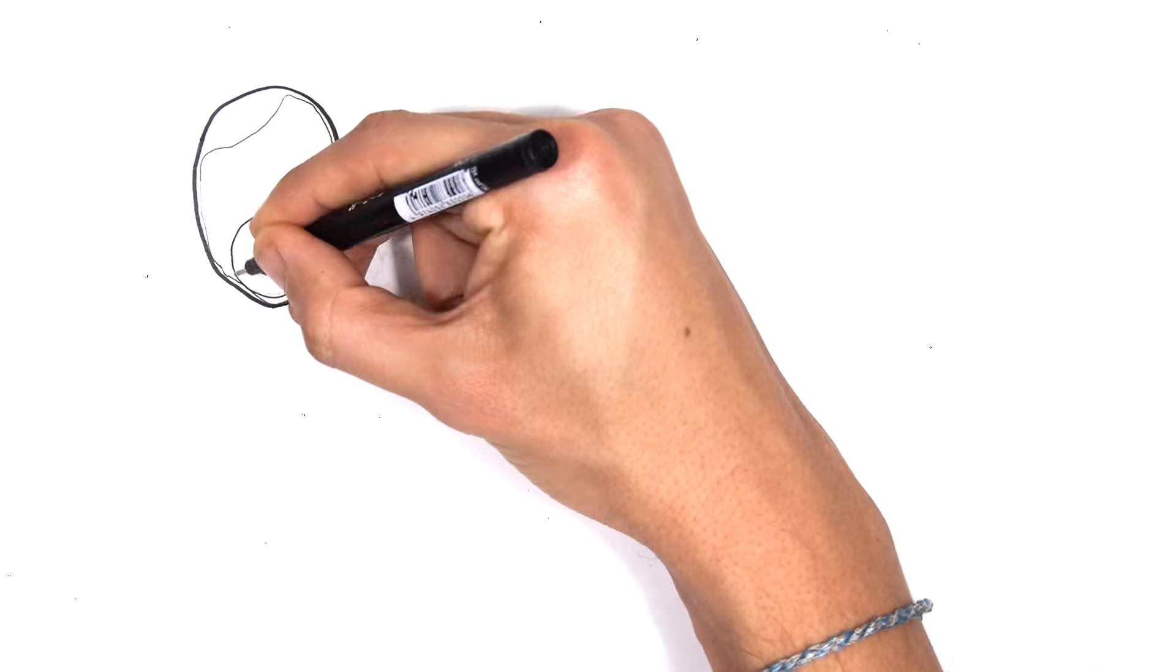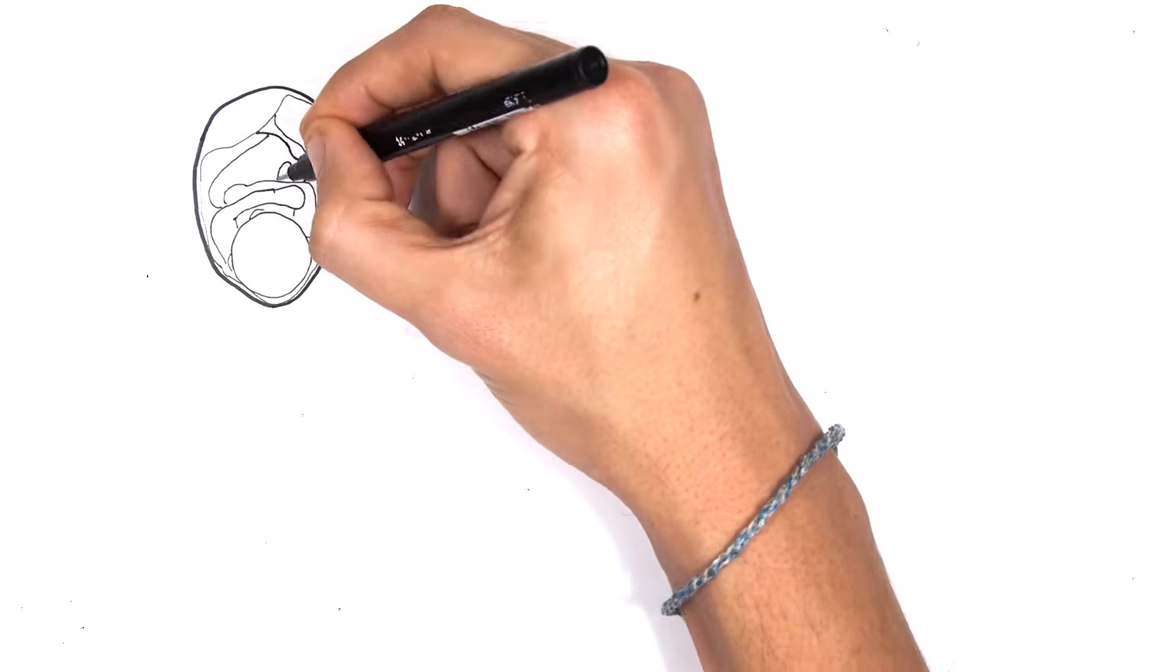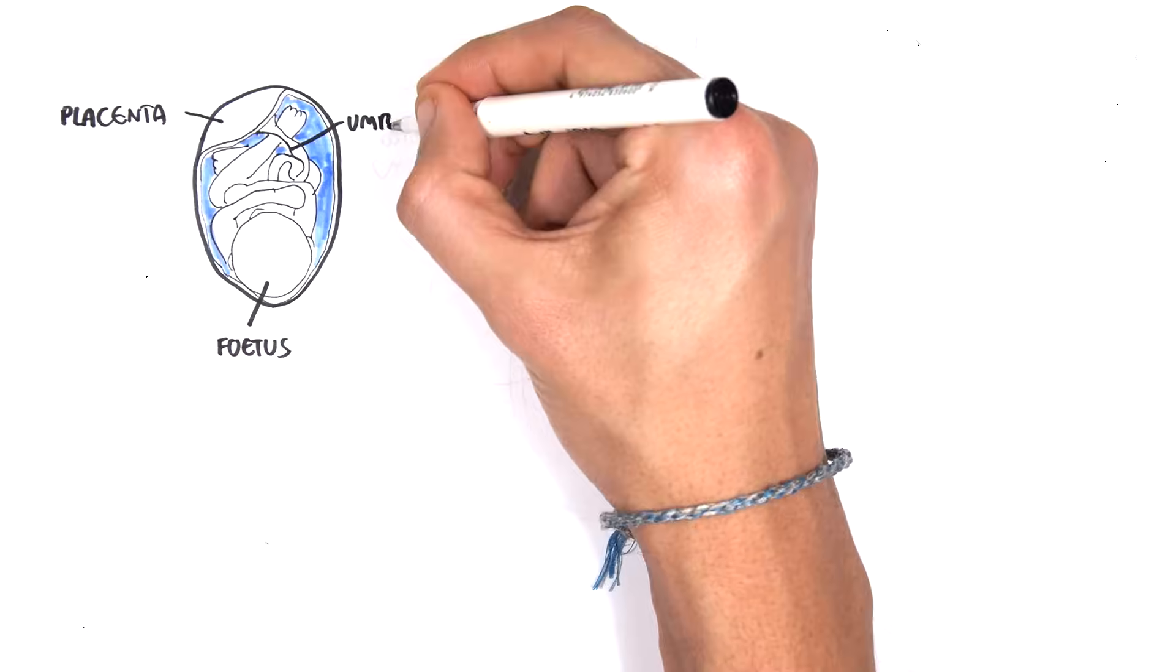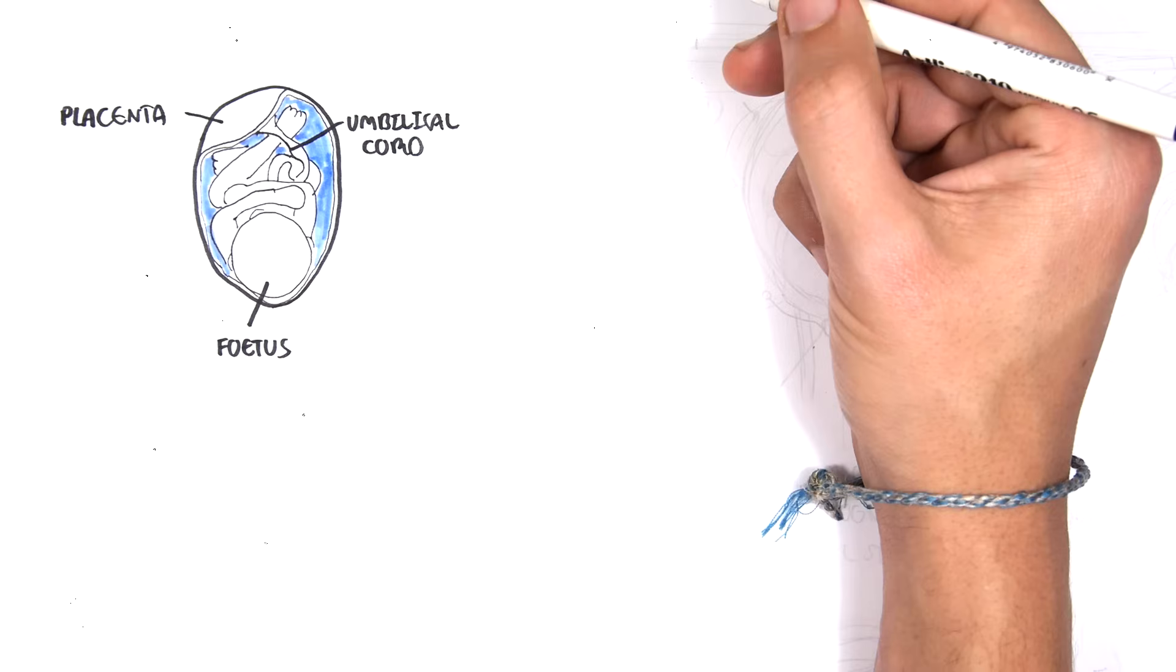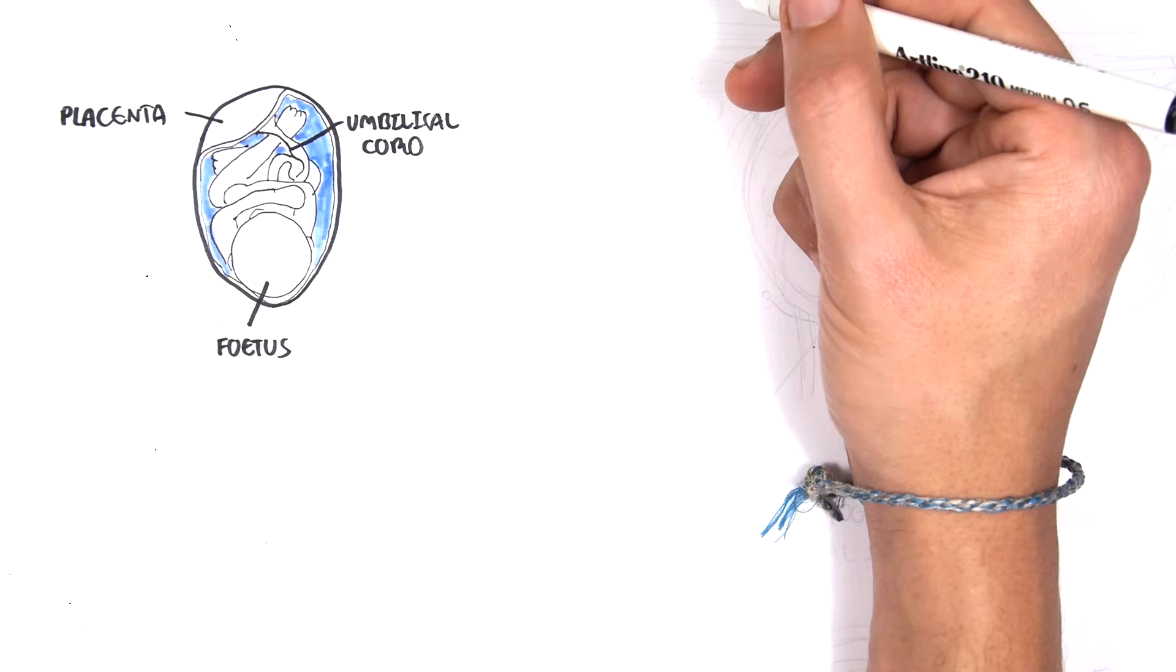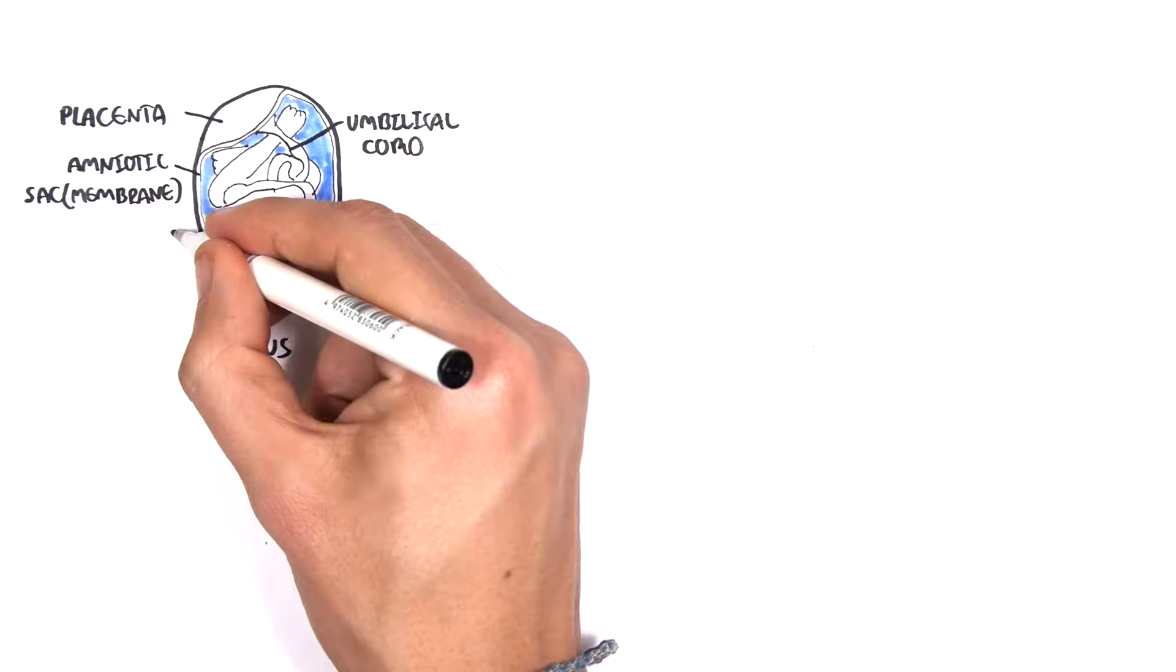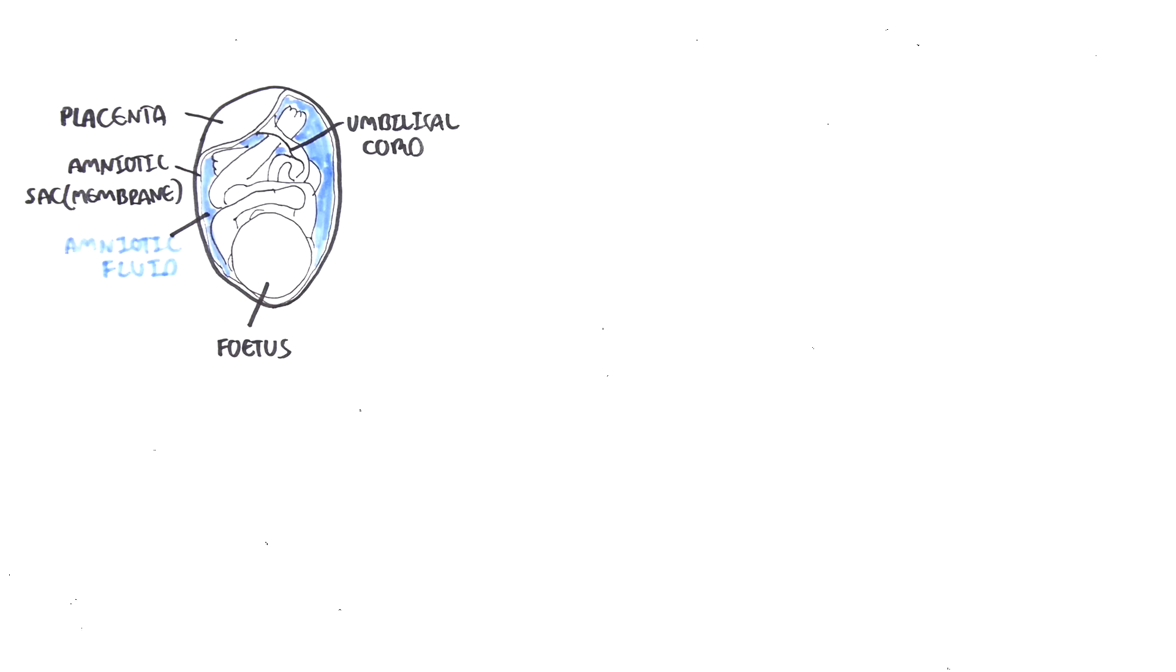So let's just recap the anatomy of the fetus within the uterus. The fetus is here, there's a placenta. The umbilical cord connects the placenta with the fetus and it provides the fetus with nutrients and takes away all the waste from the fetus to the placenta as well. The fetus is actually within an amniotic sac or the amniotic membrane, and this sac contains the amniotic fluid which is sometimes referred to as liquor.